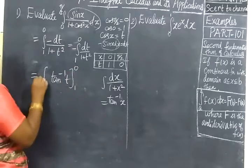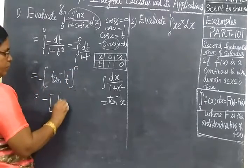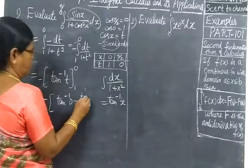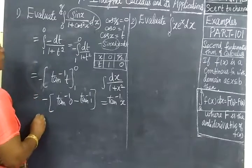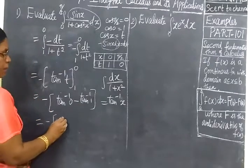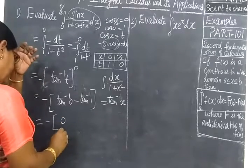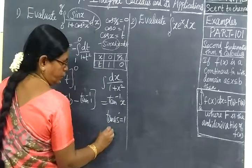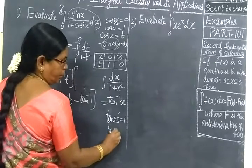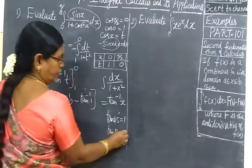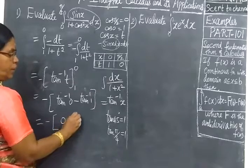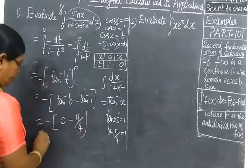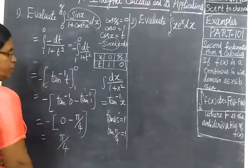With limits 1 to 0, equal to minus — applying upper limit minus lower limit — we get tan inverse 0 minus tan inverse 1. Tan inverse 0 is 0. Tan 45 degrees equals 1, so tan inverse 1 equals π/4 (since 180/4 equals 45 degrees). So the answer is minus (0 minus π/4), which equals π/4.